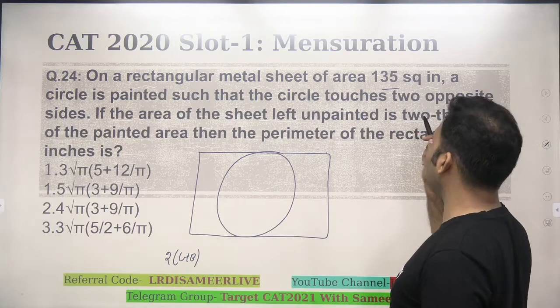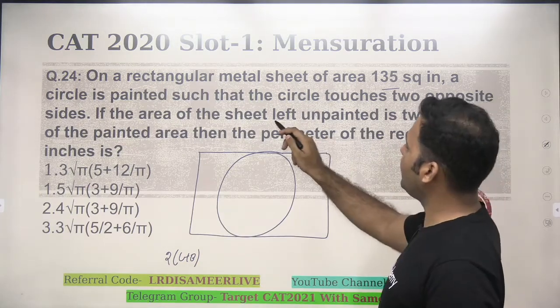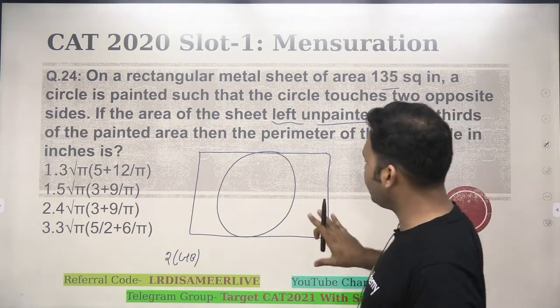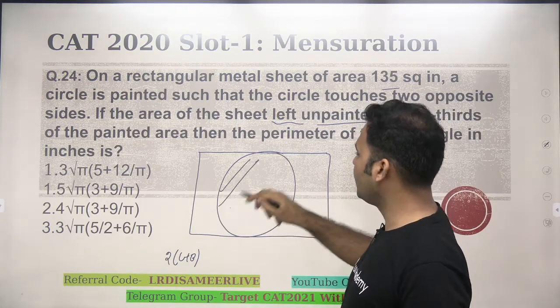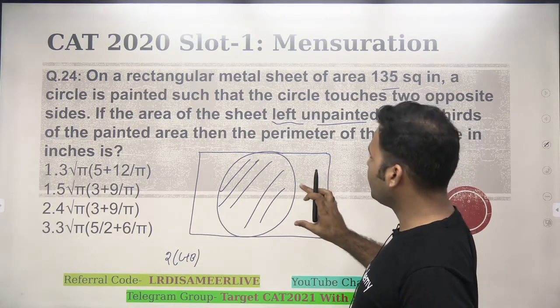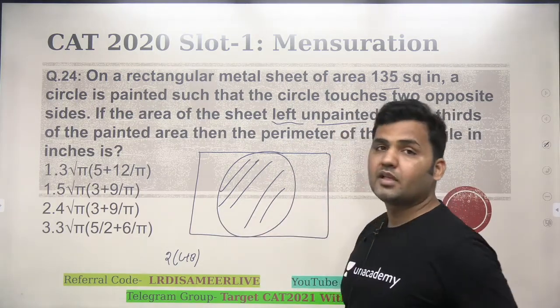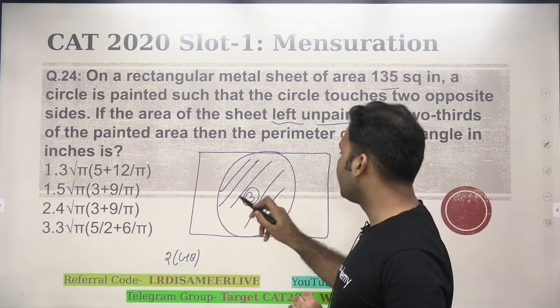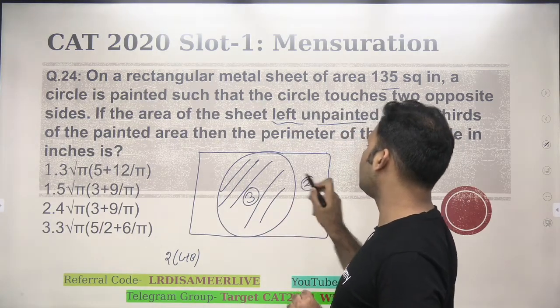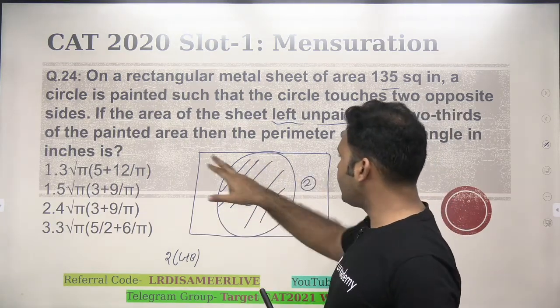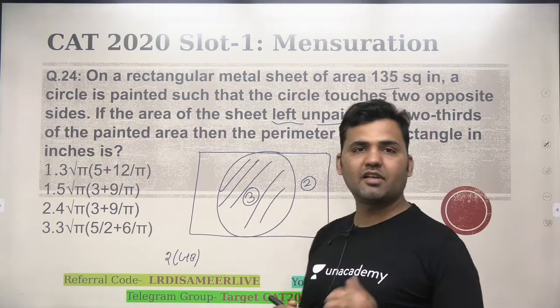Look at this guys. The ratio is given. If the area of the sheet left unpainted, now you see that this is unpainted. This is the painted area. Area of the sheet left unpainted is two-third of the painted area. If I am saying the painted area is three, that means unpainted area will be two. So, if this painted area is three, unpainted area is two, the whole sheet area will be five.